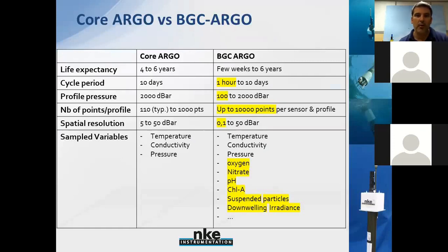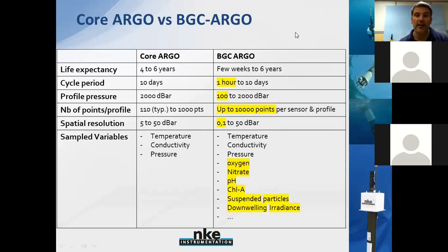The core Argo mission has a rigid scheme of a 10-day cycle period, making profiles from 2,000 decibar by sampling pressure, temperature, and salinity, with a typical number of 110 points per profile. This agreed mission scheme was one of the key points that ensured the success in sharing data and developing the array at large scale. However, more than 15 years ago, some scientists clearly identified interest for the platform to embed additional sensors for new variable acquisition.